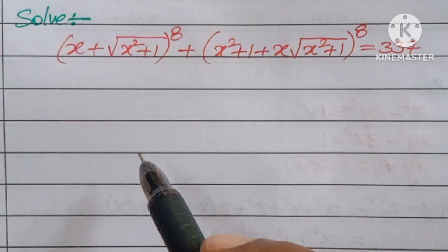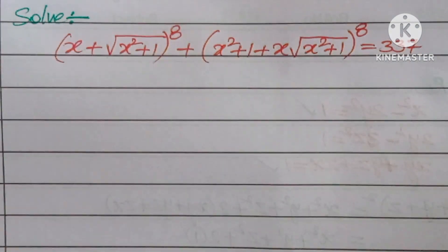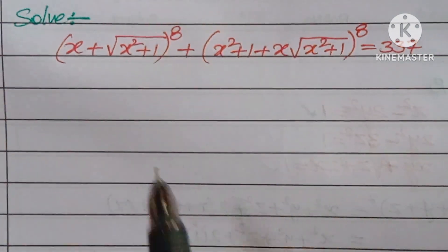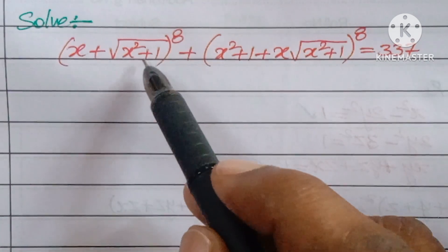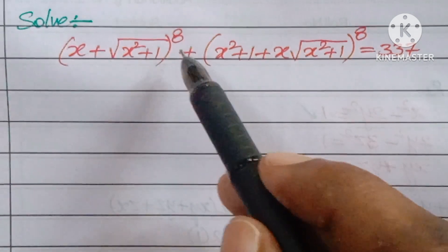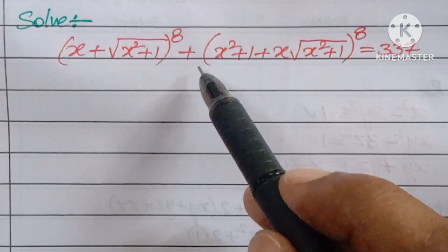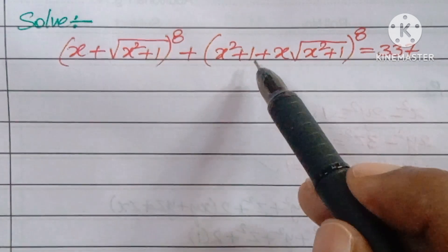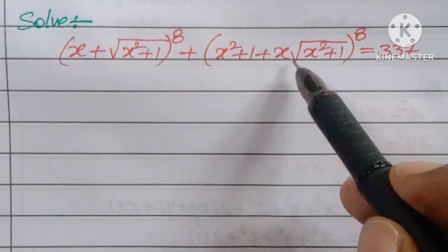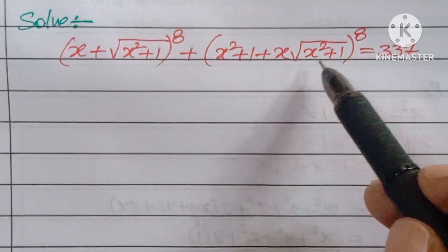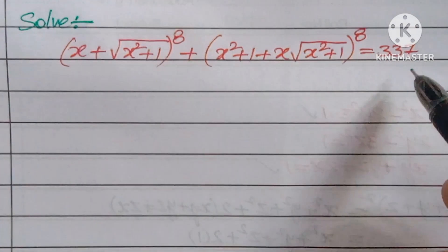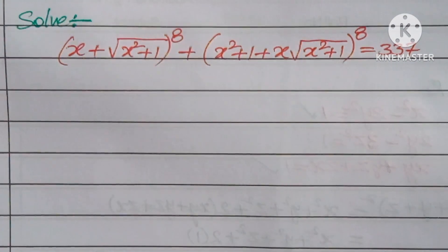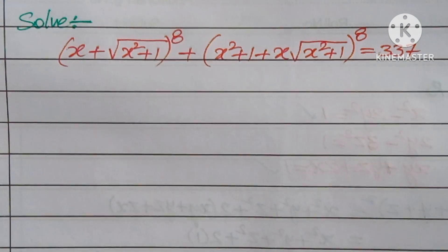Hello, welcome back to NCG Max. Today we are looking at a logical question. The question is: solve (x + √(x² + 1))⁸ + (x² + 1 + x√(x² + 1))⁸ = 3370. Pause the video for 10 seconds and try it now.